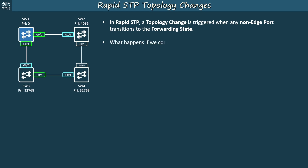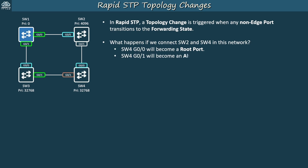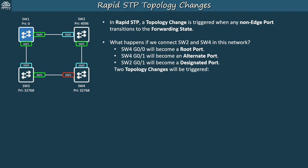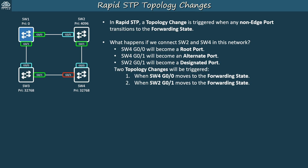What happens if we connect SW2 and SW4 like we did before? Just like in classic STP, SW4 G00 will become a root port, SW4 G01 will become an alternate port, and SW2 G01 will become a designated port. This time, only two topology changes will be triggered: when SW4 G00 moves to forwarding, and when SW2 G01 moves to forwarding.